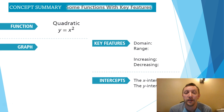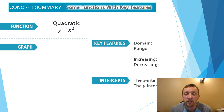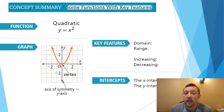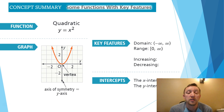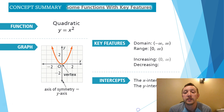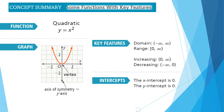Let's look at a quadratic — another parent function you should be familiar with. The parent function for a quadratic is y = x², and we'll use this a lot. The graph has a vertex at (0, 0) and a line of symmetry along the y-axis, meaning it's the same on both sides. The domain goes from negative infinity to infinity. The range starts at 0 and goes up to infinity — the minimum value is 0, included with a bracket. It's increasing from 0 to infinity and decreasing from negative infinity to 0. The x-intercept and y-intercept are both at 0.